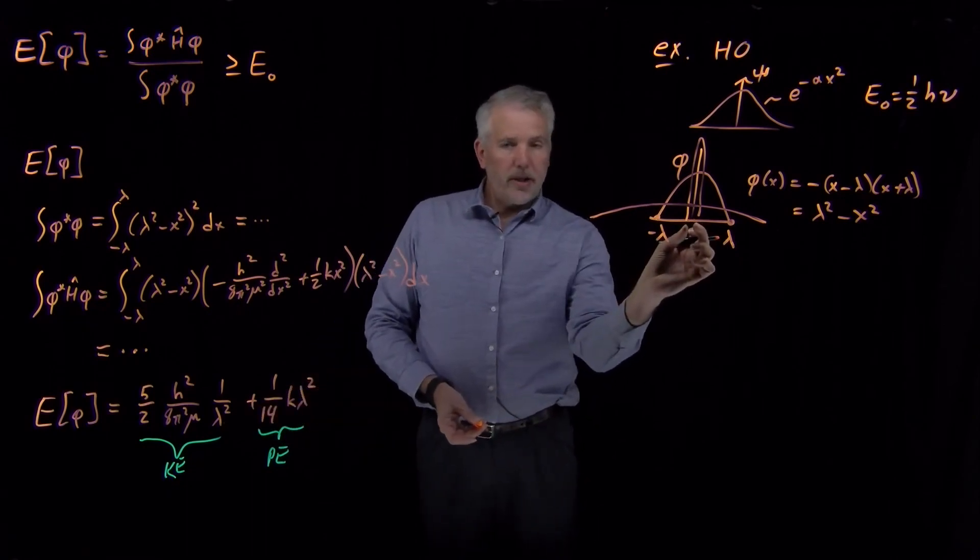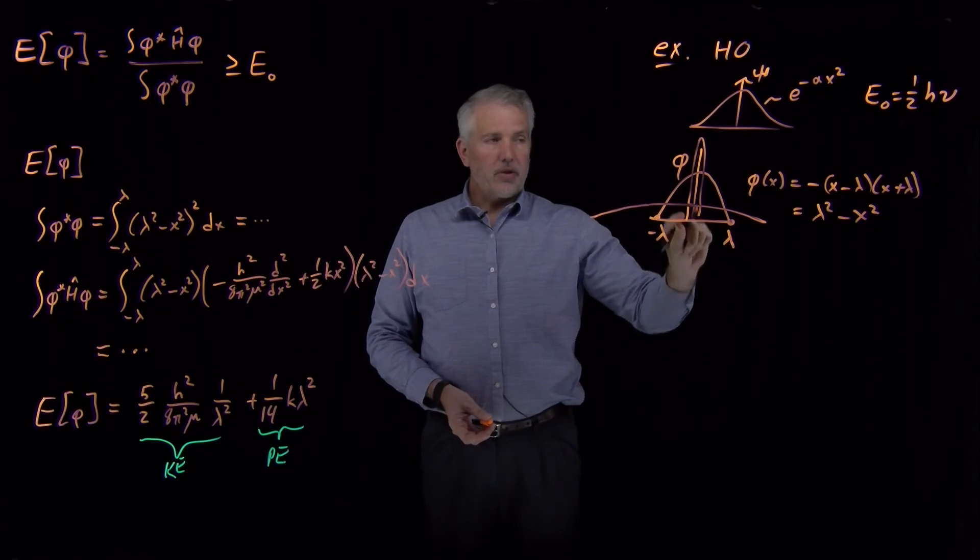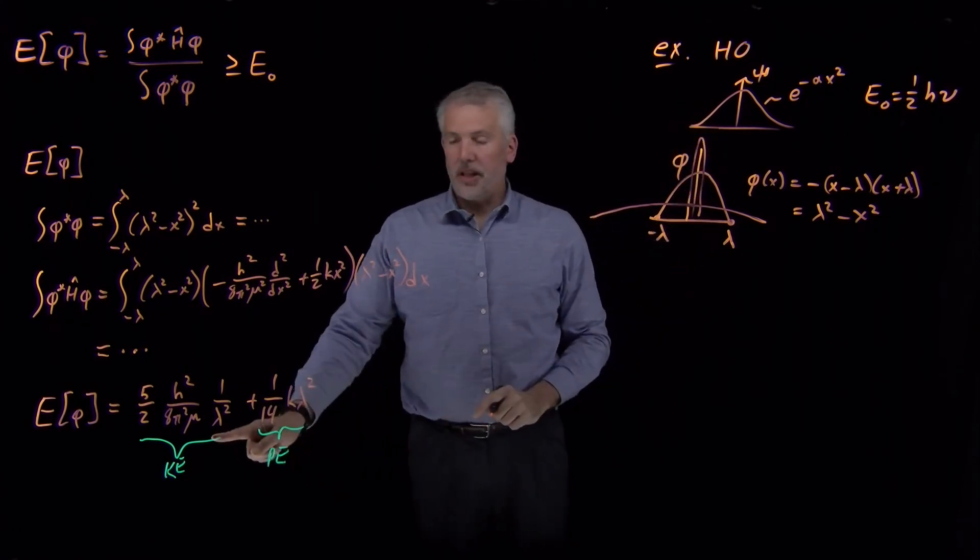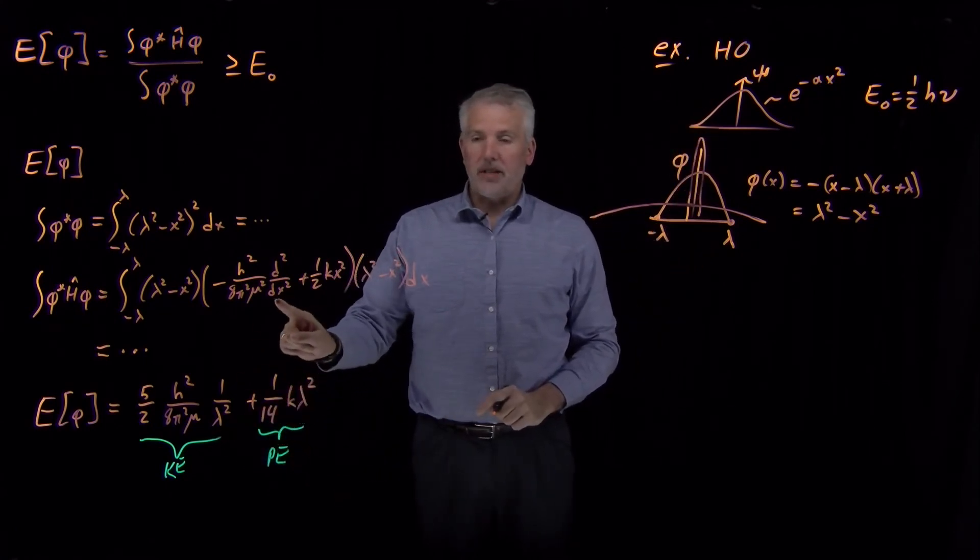If I choose a very small value of lambda, so the function is very sharply peaked, it goes up very quickly and down very quickly, that function has a large kinetic energy because it has a large curvature.